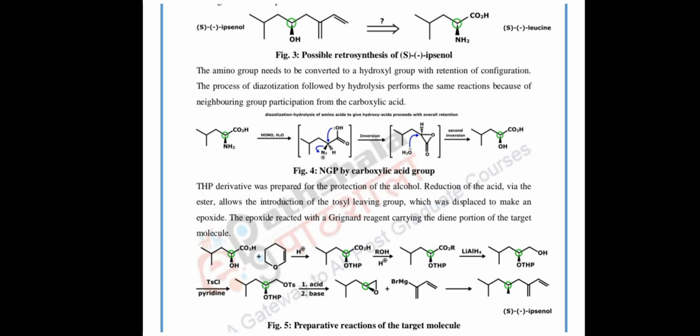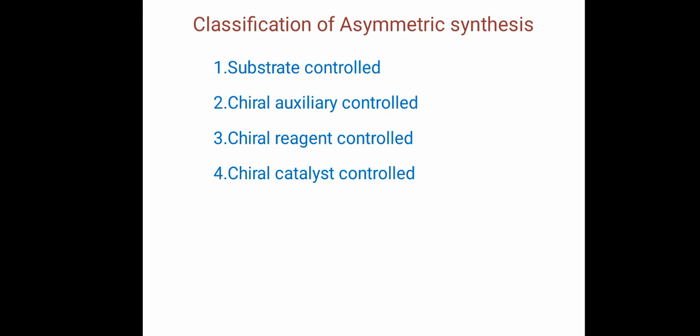So this is the retrosynthetic analysis showing the synthesis of S-ipsonol from S-leucine. This is an important topic and there is a strong chance this question will appear on an exam, so please study the reaction carefully. Next, we will discuss the classification of asymmetric synthesis. There are four types: substrate control, chiral auxiliary control, chiral reagent control, and chiral catalyst control. We will discuss each one in the next video.